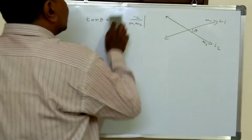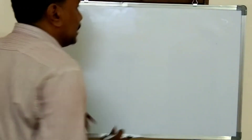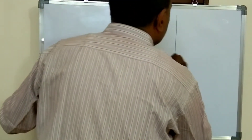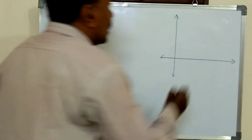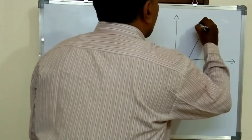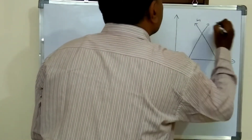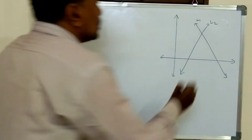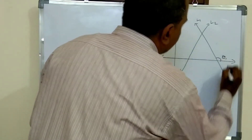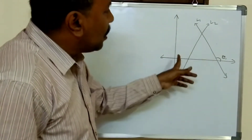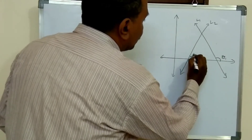For that we have to take the coordinate axis — X axis, Y axis. I am drawing a line L1 and line L2. These two lines are intersecting each other. This is the acute angle formed by these two lines. L1 makes an angle theta1 on the x axis, and L2 makes an angle theta2 on the x axis.